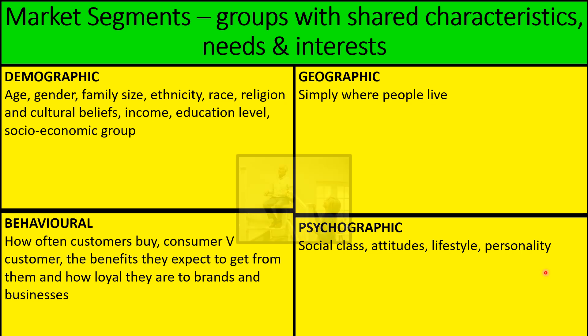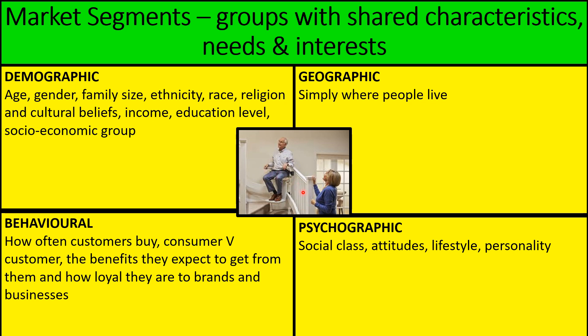Looking at a couple of examples: here is a chairlift. Someone who finds it difficult to go upstairs may well buy one. Segmenting this market, the image shows older people, so we might segment on age because traditionally it's older people who are less able to go upstairs. We might also segment psychographically on lifestyle, as there are people who are disabled. And we might segment on income because chairlifts are really expensive — so we're looking for older people with higher income who find it difficult to walk.